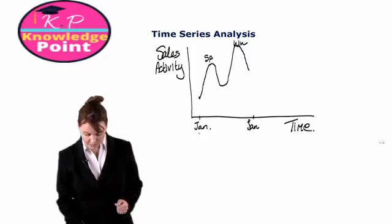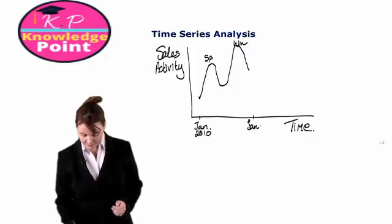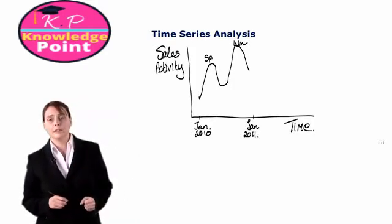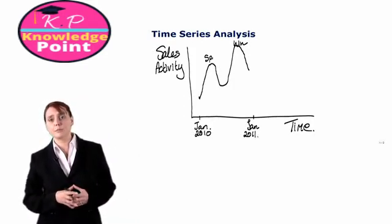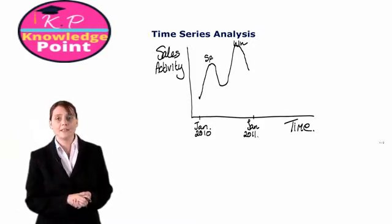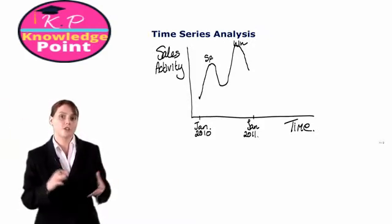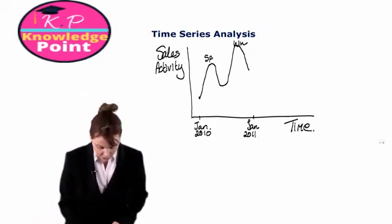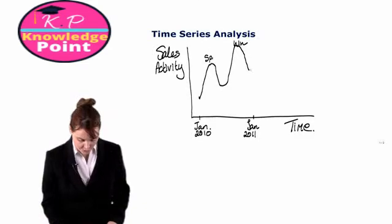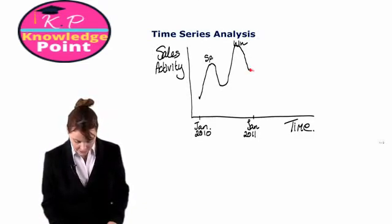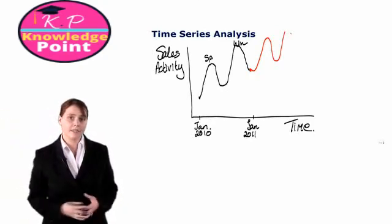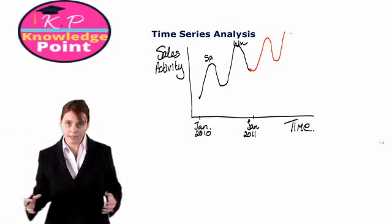If we take this to be January 2010 and this to be January 2011, and we want to forecast what will our sales be perhaps in January 2012 or March 2012 and so on. Well, what we would want to do then is try and establish if we were to continue on this line, where would it go to next? So we want to extrapolate our time series line outwards into the future.